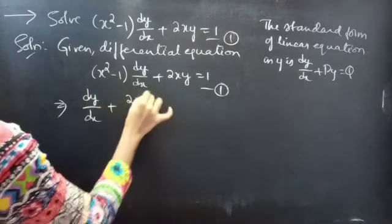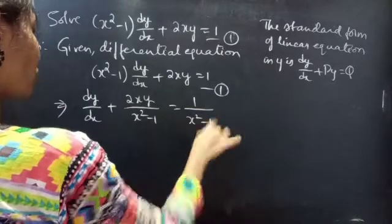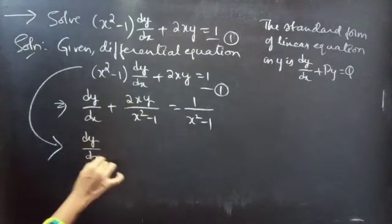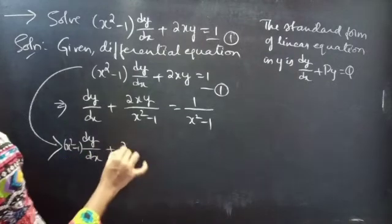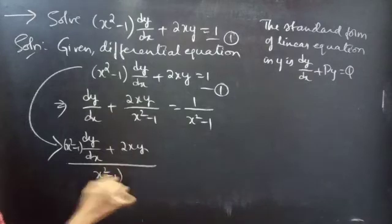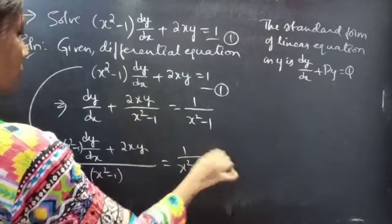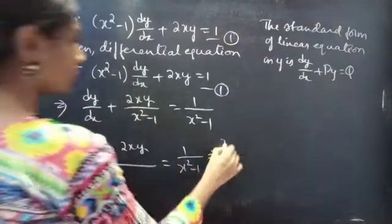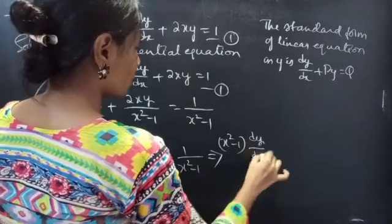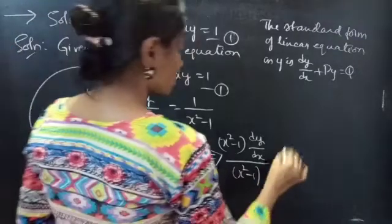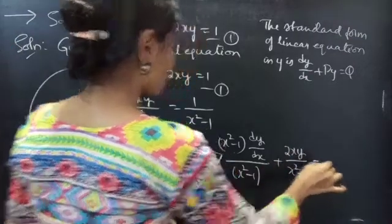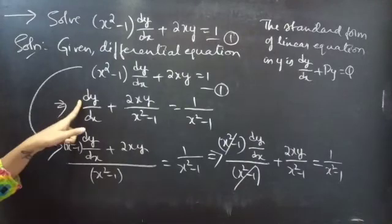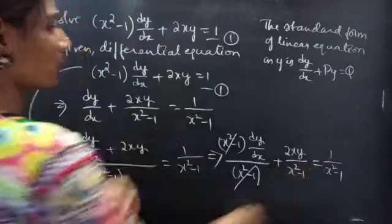We can just write directly: divide the whole equation by (x² - 1). This gives dy/dx + 2xy/(x² - 1) = 1/(x² - 1). Splitting the left-hand side: (x² - 1)·(dy/dx)/(x² - 1) + 2xy/(x² - 1) = 1/(x² - 1). The (x² - 1) cancels from the first term, giving dy/dx + 2xy/(x² - 1) = 1/(x² - 1).